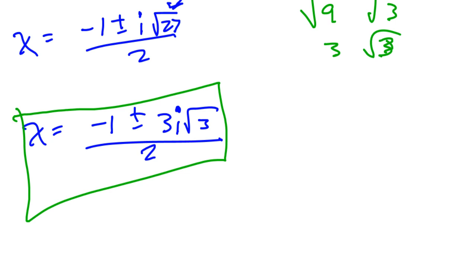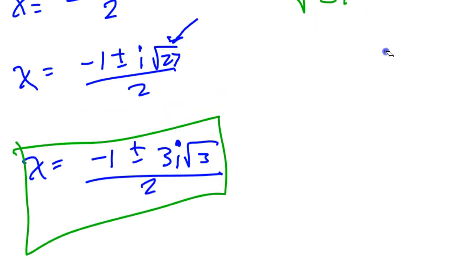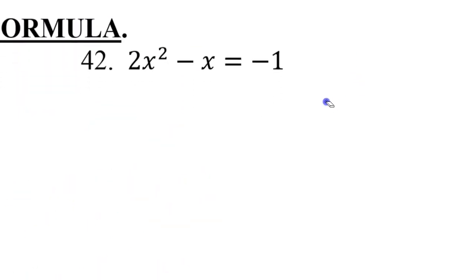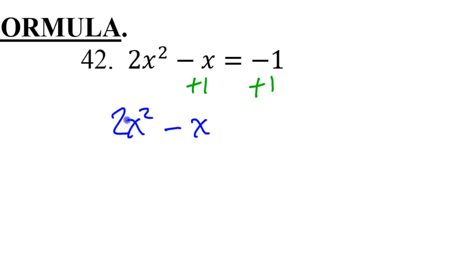Any questions about number 41? Last one. This one is out of order. So I need to add 1 to both sides. I need a 0 over here. So I'm going to add 1 to both sides to start out. That's going to give me 2x squared minus x plus 1 is equal to 0.